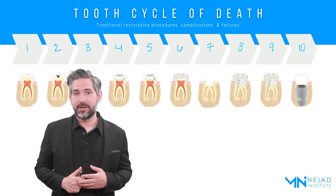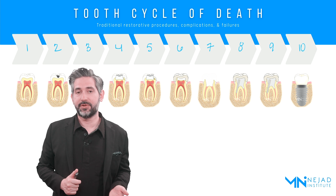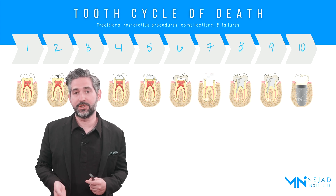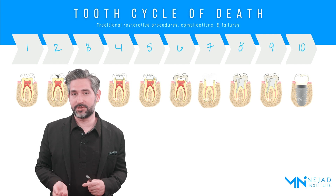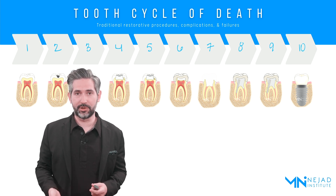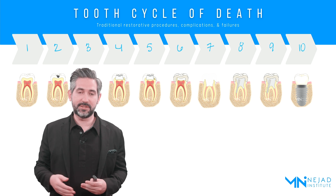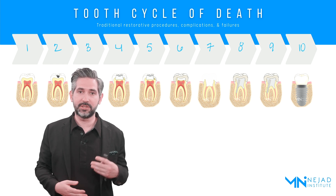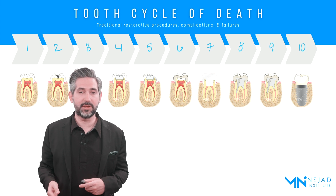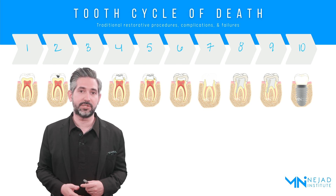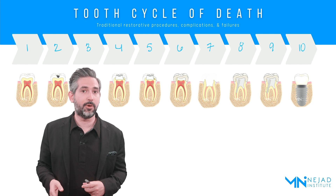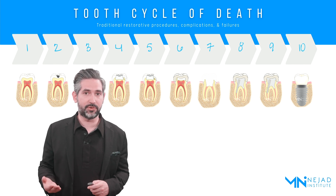Hi, I'm Dr. Matt Najad, and in this video I'm going to be talking about the tooth cycle of death, which describes a process or cycle that occurs very commonly in restorative dentistry. It's basically a series of different interventions and failures that culminates in loss of teeth. We're going to review this so that we can understand how changing the approach can minimize this and help us preserve and keep teeth for life.